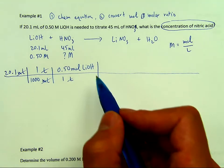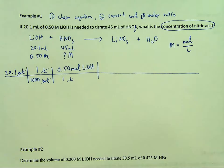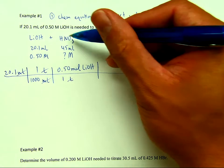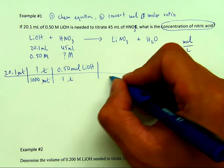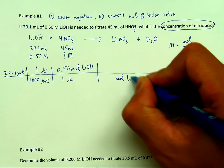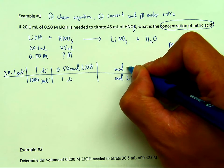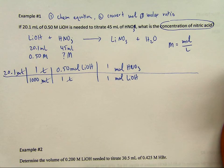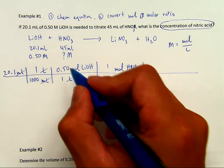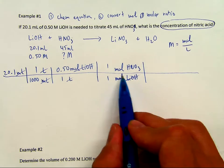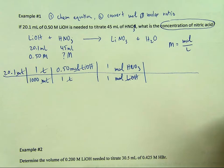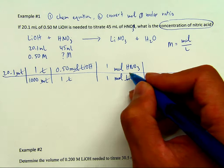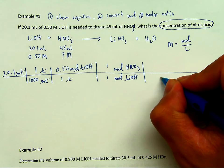Once you have moles of lithium hydroxide, we can use stoichiometry to figure out anything else if we have the balanced chemical equation. Here, we're trying to convert it into moles of nitric acid, so I'm going to use the molar ratio. The ratio here is 1 to 1. I know 1 over 1 is 1, but you can't skip that step because sometimes it won't be 1 to 1. Now we have moles of HNO3. The very last step is to find concentration of the nitric acid — concentration is mole per liter, so the last step is to divide by liters.